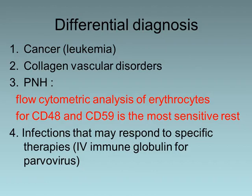Differential diagnosis should be made from leukemia, collagen vascular disorders, and paroxysmal nocturnal hemoglobinuria, usually by doing flow cytometry of red cells looking for CD48 and CD59, which is a very sensitive test. It should also be differentiated from infections that may respond to specific therapies, such as IV immunoglobulin for parvovirus.